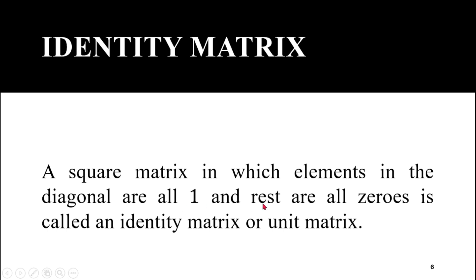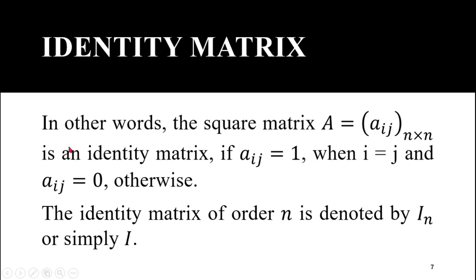Identity matrix: a square matrix in which all diagonal elements are 1 and all remaining elements are 0 is called an identity matrix or unit matrix. The identity matrix is a type of scalar matrix — it is a square matrix with all non-diagonal elements equal to 0 and all diagonal elements equal to 1, which is a stronger condition than that of a scalar matrix.